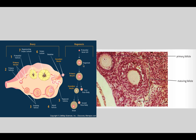Inside the ovary, oogonia keep dividing during mitosis so you have plenty of them. You're born with a primary oocyte. When you reach puberty it becomes really big and undergoes meiosis one. The first polar body dissolves. The secondary oocyte is ovulated. If there's a sperm, meiosis two completes, forming the ovum plus a smaller second polar body.